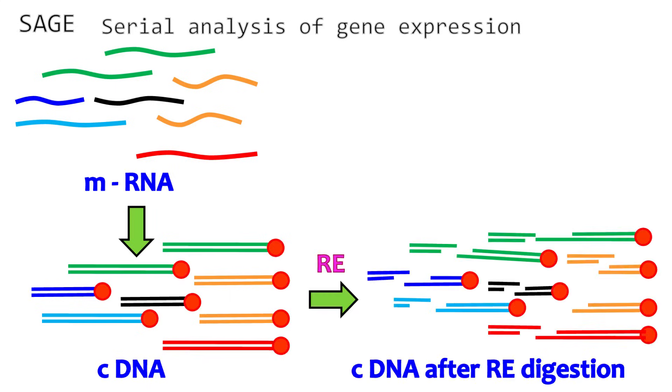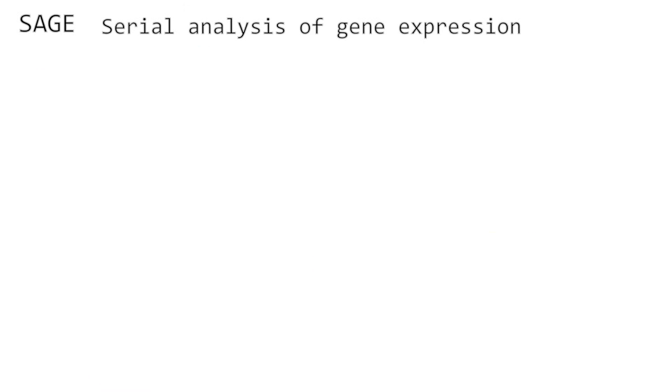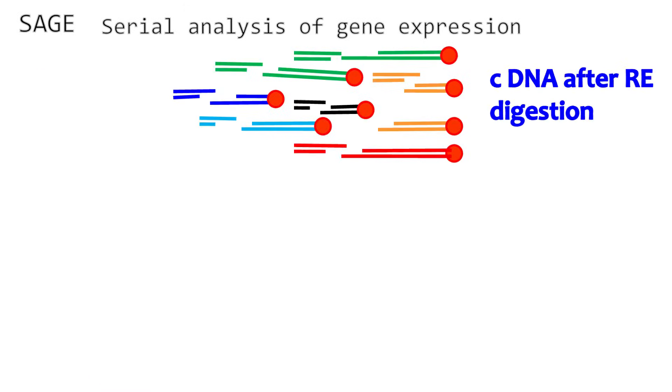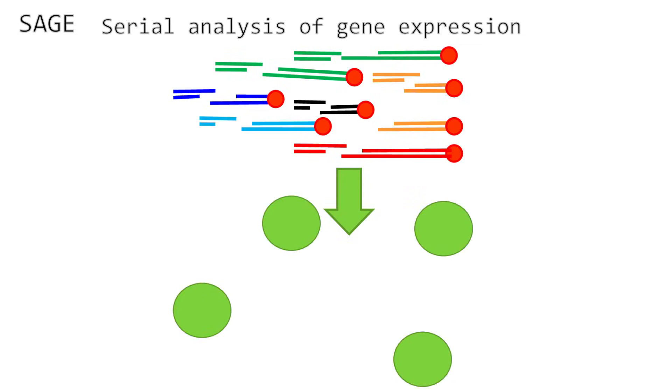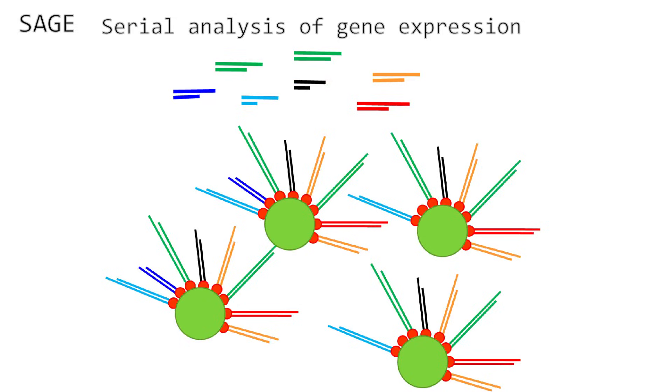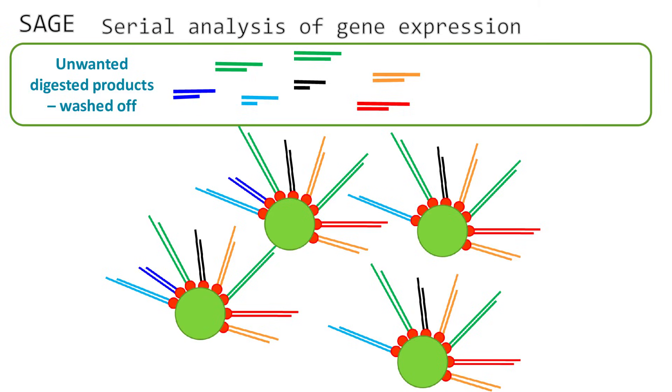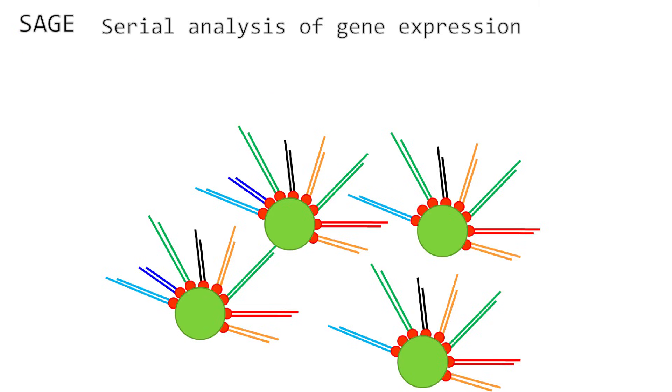In the next step, using a restriction enzyme, the cDNA is digested. To separate the tagged cDNA from the unwanted digested products, a bead is used which is very specific for the tag. The tagged cDNA is attached with the bead and the rest of the unwanted digested products can be easily washed off.